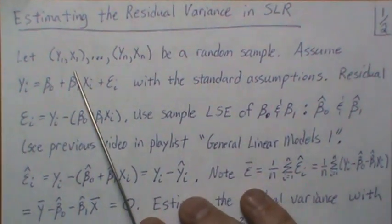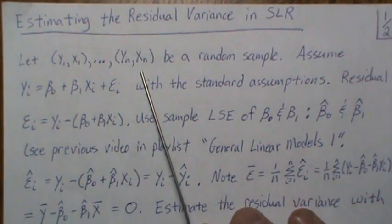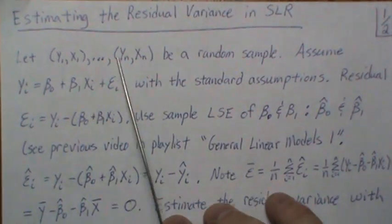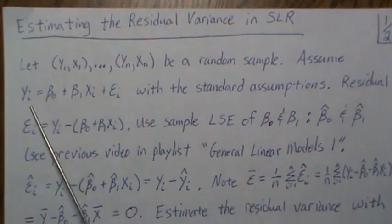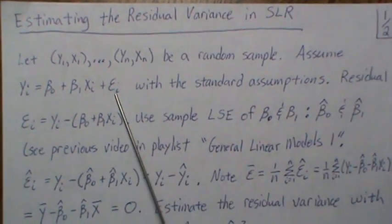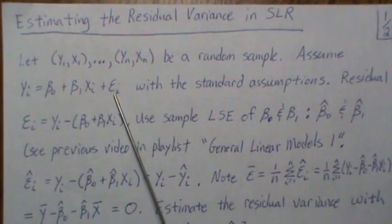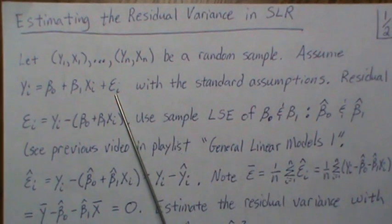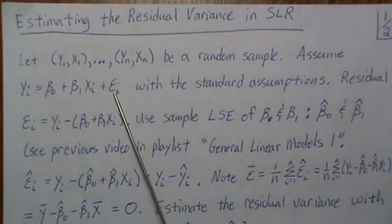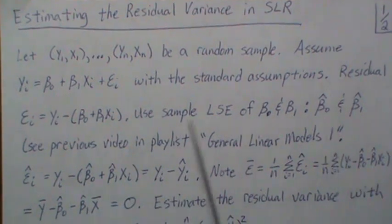Let (y1, x1) through (yn, xn) be a random sample. We're in the simple linear regression setting, collecting tuples where the x's help predict the y's through a linear relationship. We assume the simple linear regression model with the standard assumptions: SA1 is that the average residual is zero; SA2 is that the variance is constant, called sigma squared — which is what we're trying to estimate; and SA3 is that the errors are uncorrelated, i.e., the covariance between any two errors is zero.